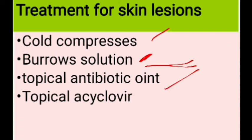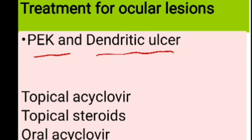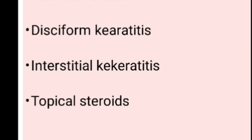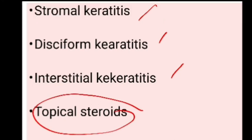For skin lesions, cold compresses or Burow's solution — a solution of water and aluminium acetate that relieves itching and stinging — along with topical antibiotic ointment can be used. For ocular lesions, in punctate epithelial keratitis or pseudodendrites, use topical acyclovir with topical steroids and oral acyclovir. For stromal keratitis such as disciform or interstitial keratitis, use topical steroids. Surgical options include lateral tarsorrhaphy, amniotic membrane transplantation, tissue adhesives with bandage contact lens, or ultimately keratoplasty.